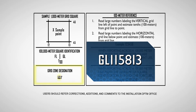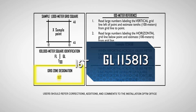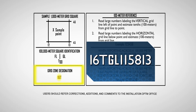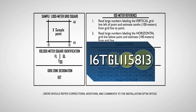Identify the grid zone designation — 16-Tango in this example — by looking in the grid zone designation box in the margin of the map. Place the grid zone designation, 16-Tango, in front of the 100,000-meter square identifier, Gulf-Lima, and the grid coordinate, 115,813. The final grid coordinate becomes 16-Tango, Gulf-Lima, 115,813.